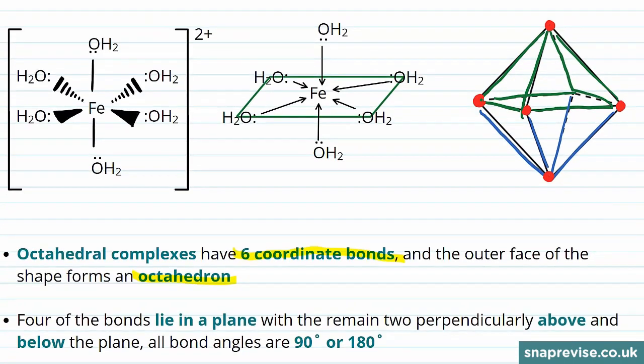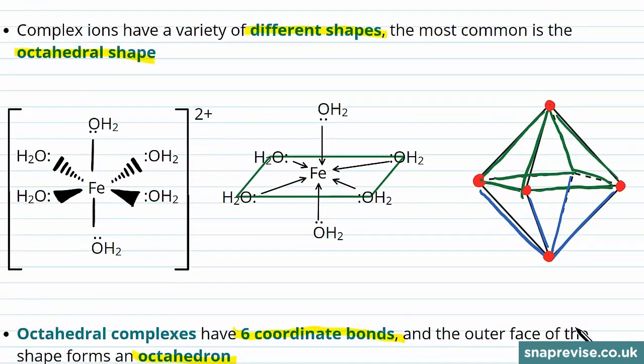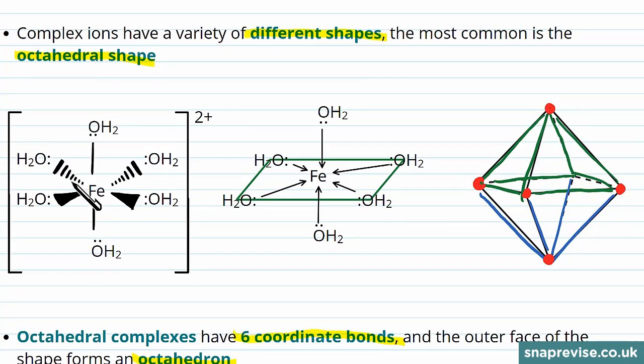Four of the bonds lie in a plane and the other two are perpendicularly above and below the plane. So we show this when we draw the complex ion by having the dashed bonds going back into the page and the wedged bonds coming out of the page towards us.